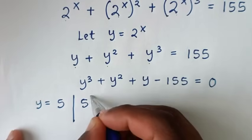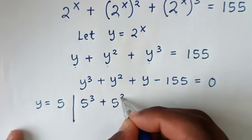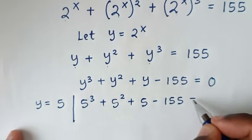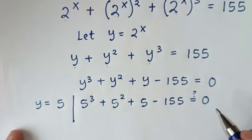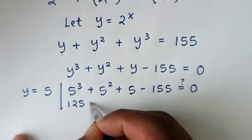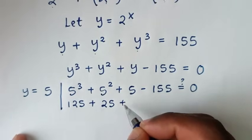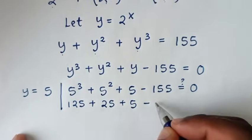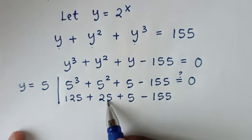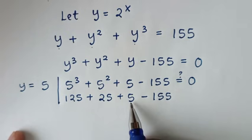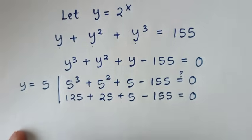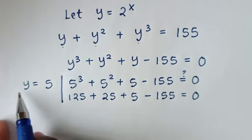Substituting y equal to 5: it will be 5 power of 3, plus 5 power of 2, plus 5, minus 155. Is it equal to 0? Now, 5 power of 3 is 125, plus 5 squared is 25, plus 5, minus 155. Here, 125 plus 25 is 150, 150 plus 5 is 155, 155 minus 155 is equal to 0. So one of the values of y is 5.